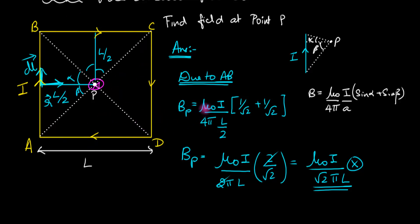All I have to do now is figure out the direction and either add them or subtract them. For BC, the DL vector is in this direction, and R vector is downwards. Using DL cross R, the magnetic field is also inward and adds up.